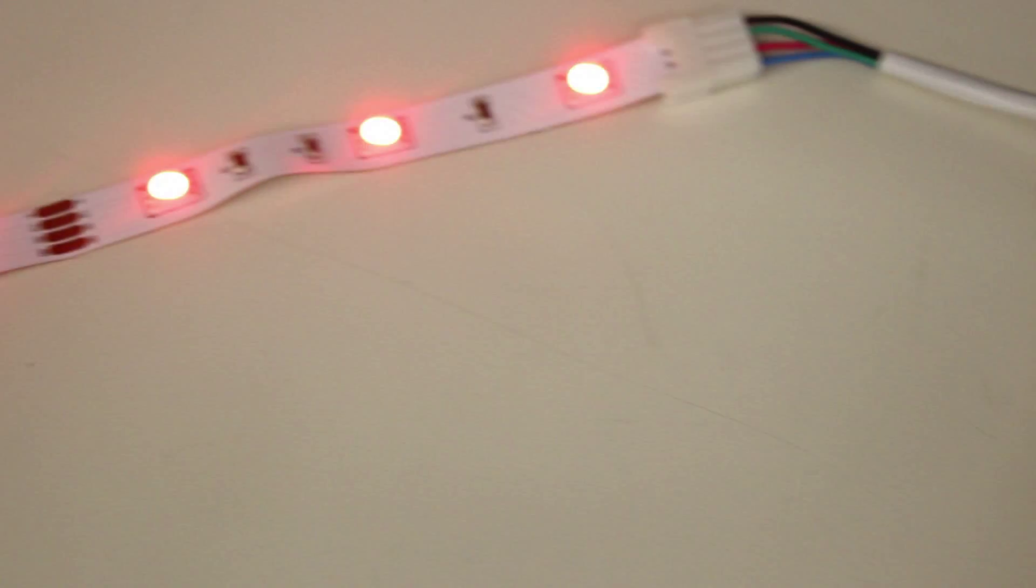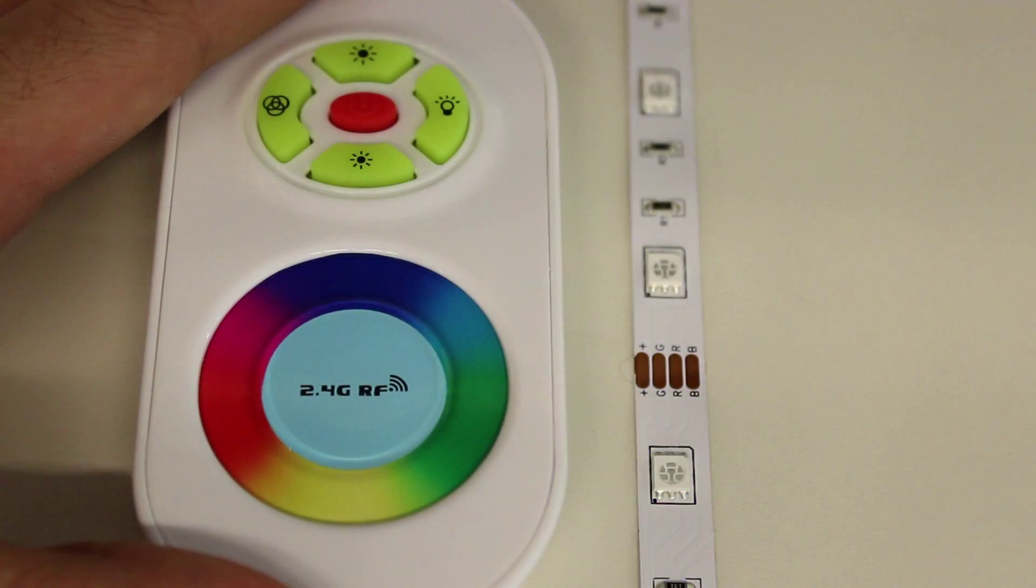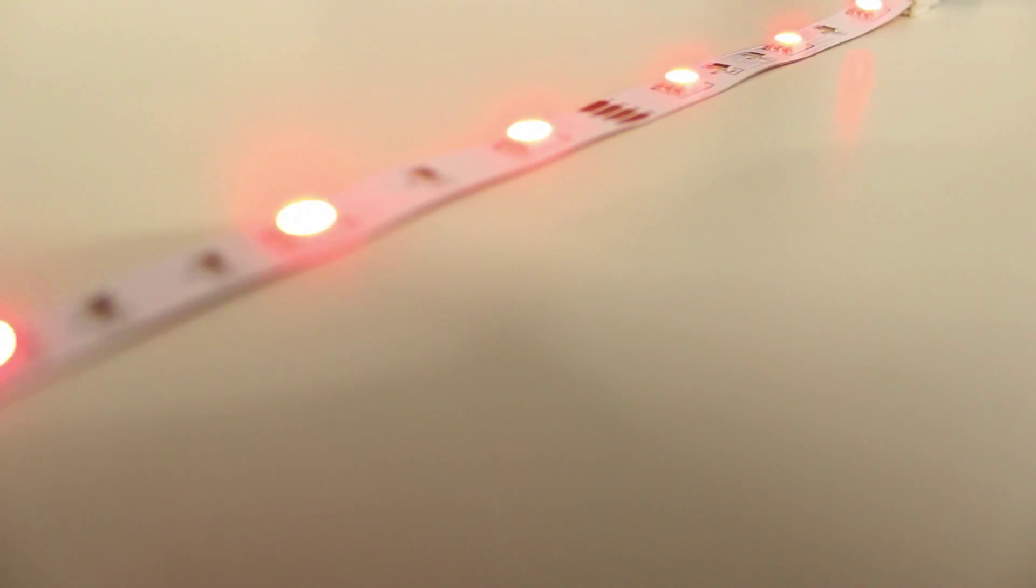And there you go. You now know all the necessary steps to cut, connectorize, and terminate an RF controlled RGB LED system. It's that easy.